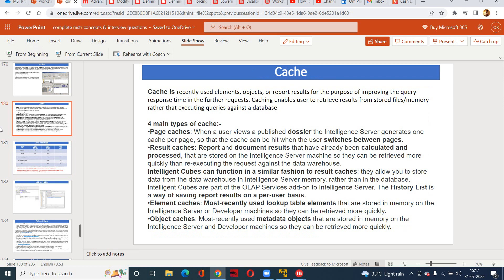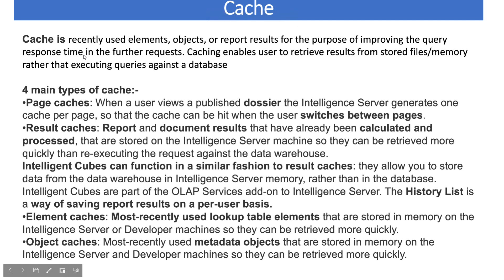Let's go to the next cache which is called as result cache. Result cache, as the name says, it can be a report cache or the document cache. But the thing you need to know is when you are running that time, the report or the document will have their own attributes and metrics and some kind of calculations have happened and they have generated some kind of results. Their results are already pre-calculated and processed and that is being stored into the intelligent server - we call it a result cache.